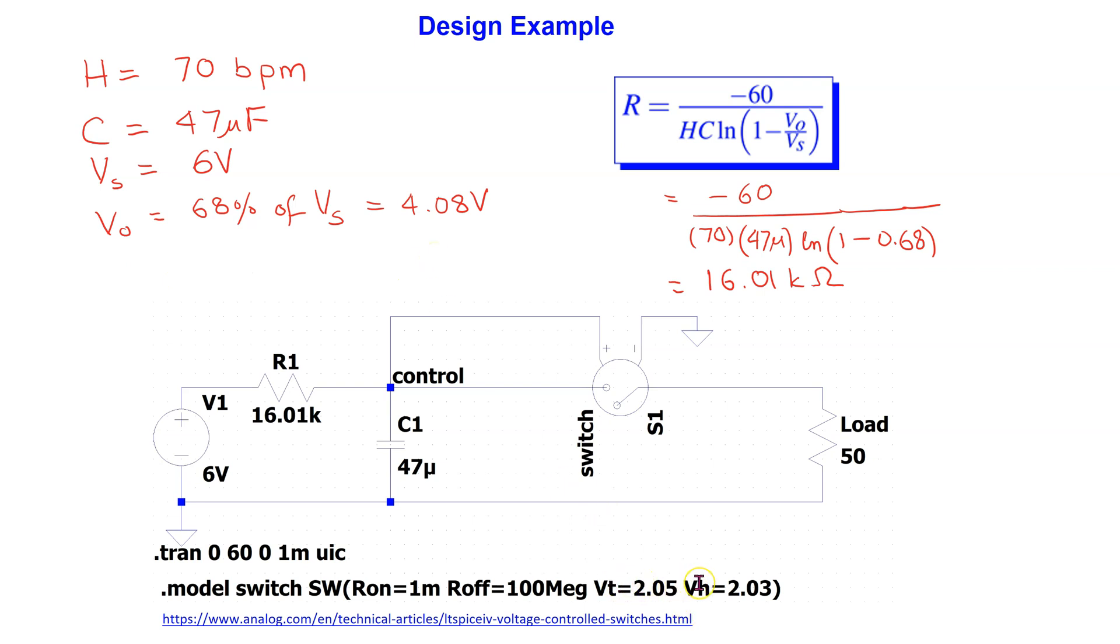Also, the value of VT minus VH is 0.02, which is close to 0. More details about the switch behavior is available at this link shown here.